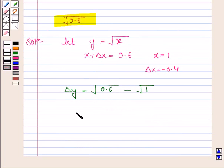Now we have delta y is equal to under the root 0.6 minus 1. So this implies under the root 0.6 is equal to delta y plus 1.